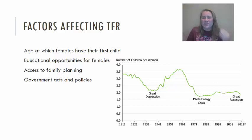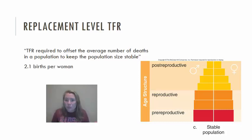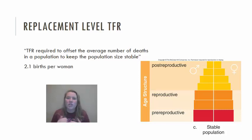That means we're below replacement fertility. Replacement level fertility is the number of births required to offset the number of deaths — what you need to keep the population stable. Globally we put this number at 2.1 births per woman. The reason it's not exactly two is because diseases and random accidents mean that if you have exactly two children per woman, not both of those children may survive.